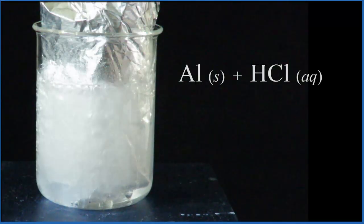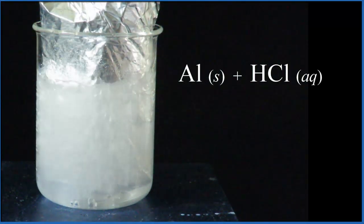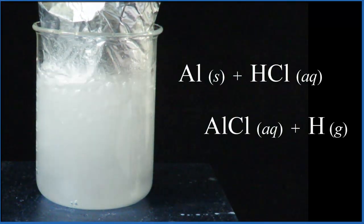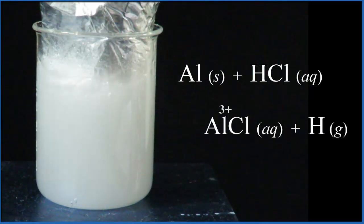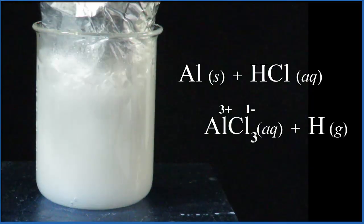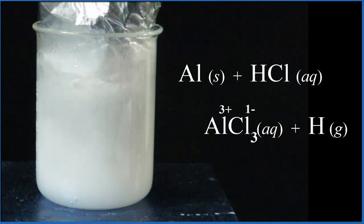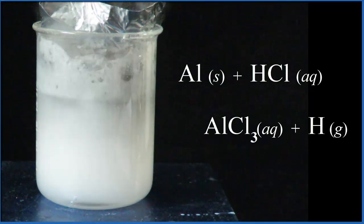Since aluminum forms 3+ ions and chlorine forms 1- ions, we'll need three chlorine atoms for one aluminum: AlCl3. Hydrogen is never just H by itself - it'll always be that diatomic gas H2.